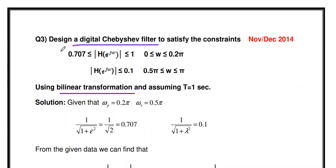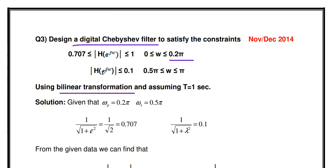So the question is: design a digital Chebyshev filter to satisfy the constraint — magnitude of H(e^jω) between 0.707 to 1 for frequency ω between 0 to 0.2π, and magnitude of H(e^jω) less than 0.1 for frequency between 0.5π to π, using bilinear transformation. Assume sampling time T equal to one second.